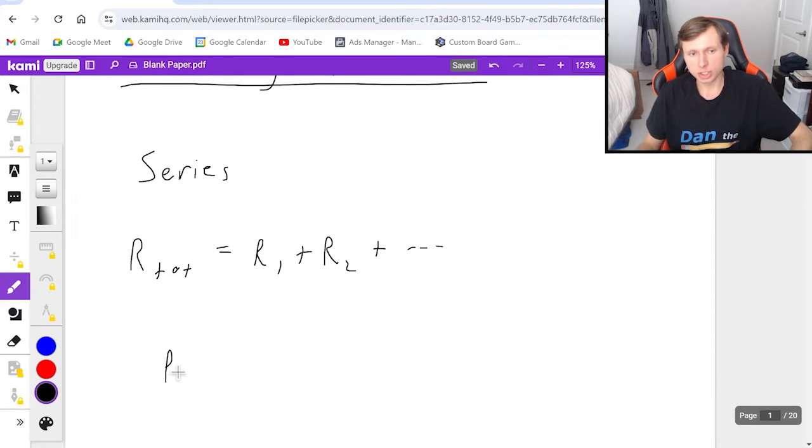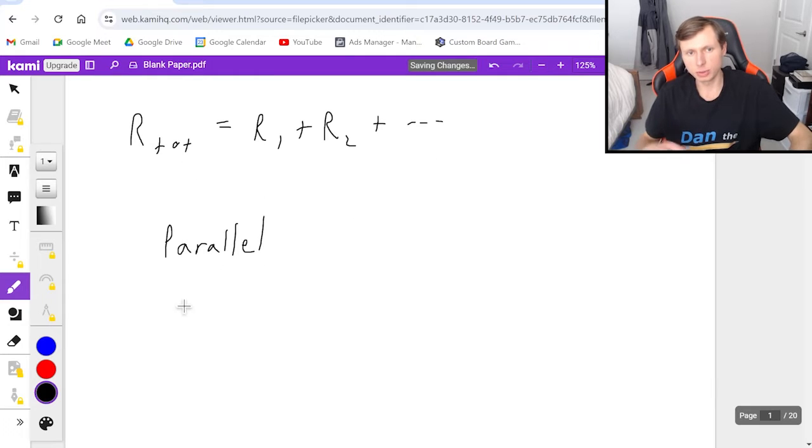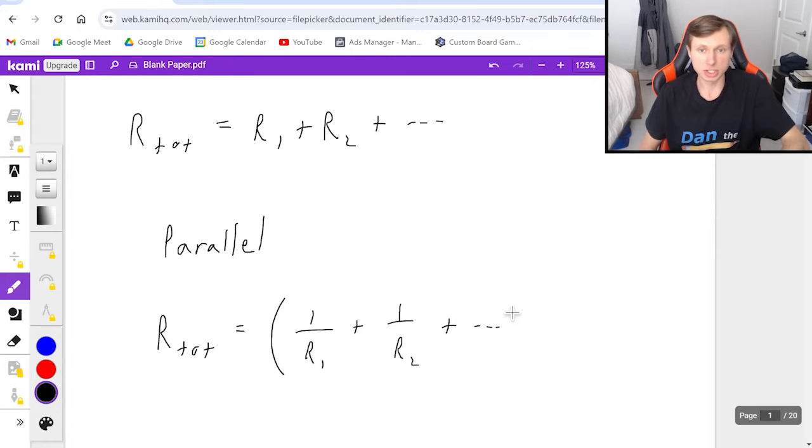And then if your resistors are in parallel, it means you're going to use the equation R total equals, in parentheses, 1 over R1 plus 1 over R2 plus dot dot dot however many resistors you have, and that's to the negative first power.